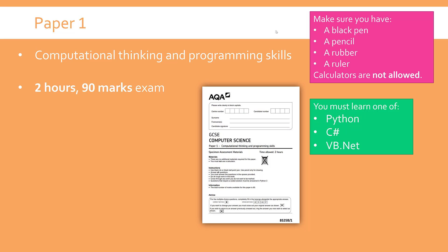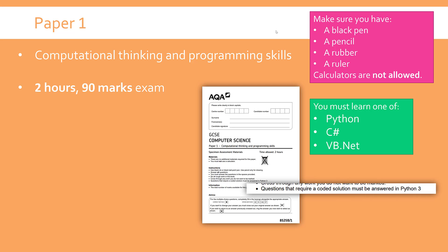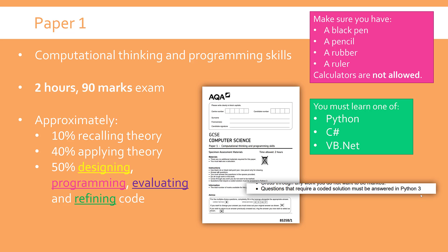Because paper one is programming, AQA have specified you must study one of three languages: Python, C# or Visual Basic — so you should know which one you're doing. The actual paper one is a little bit different depending on what language you're doing; it will say on the front page 'you must answer in X language'. Python 3, by the way, is Python version 3 — version 2 was taught a while back but isn't really anymore. The structure of the paper will vary a little bit; there are no sections, just a mix of different topics and questions.